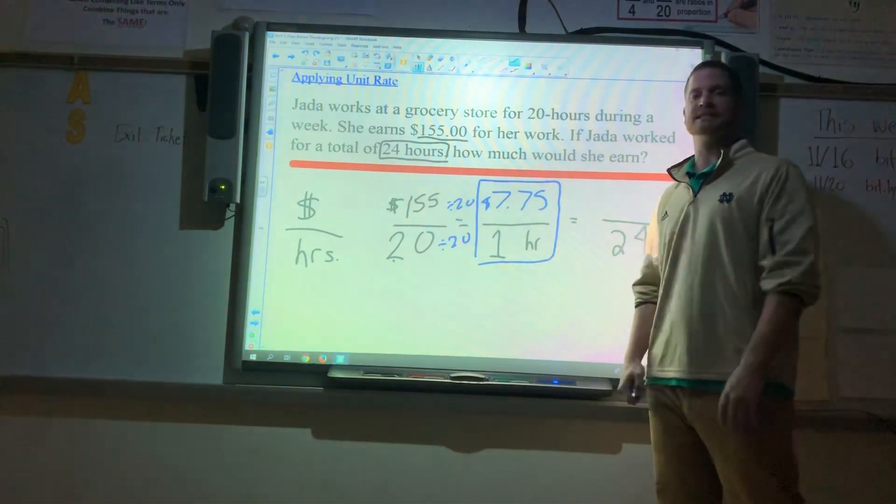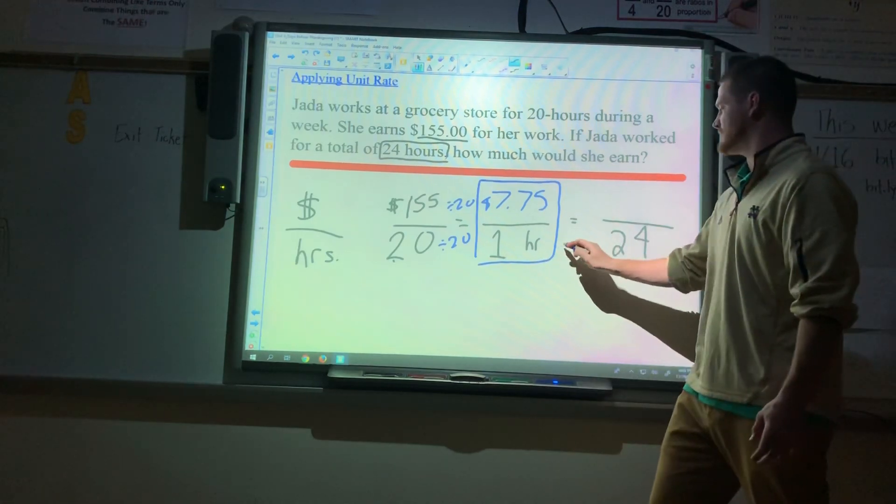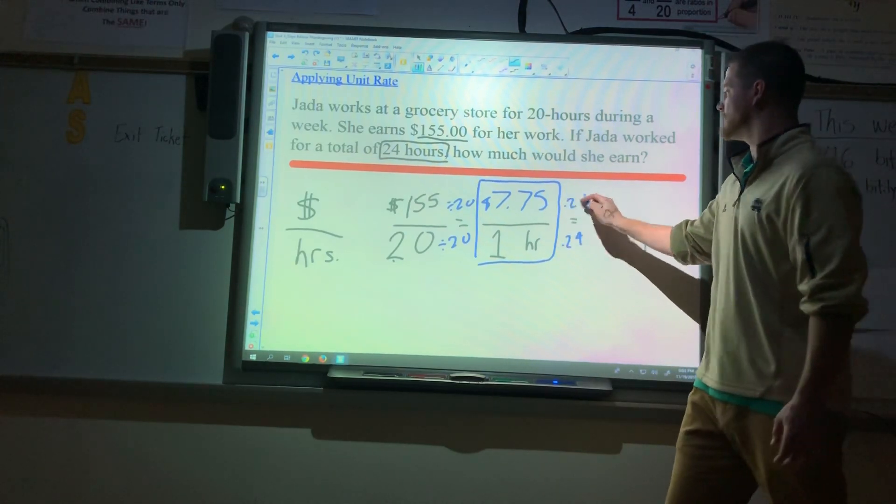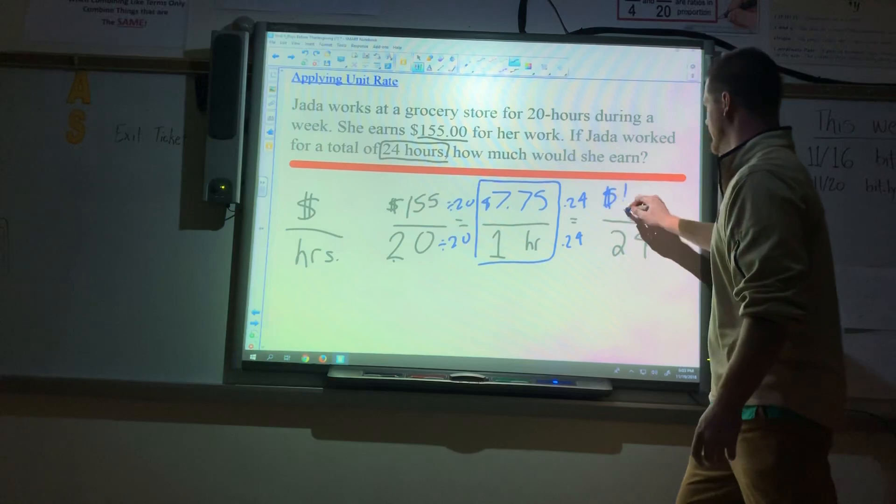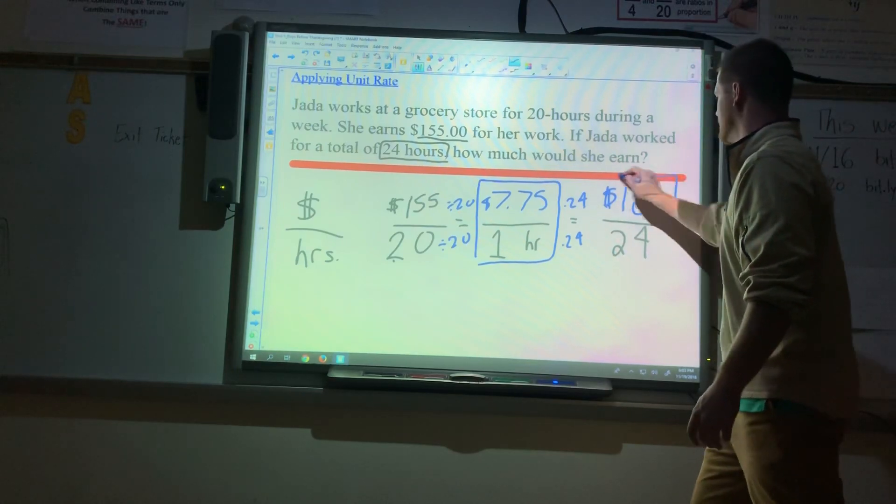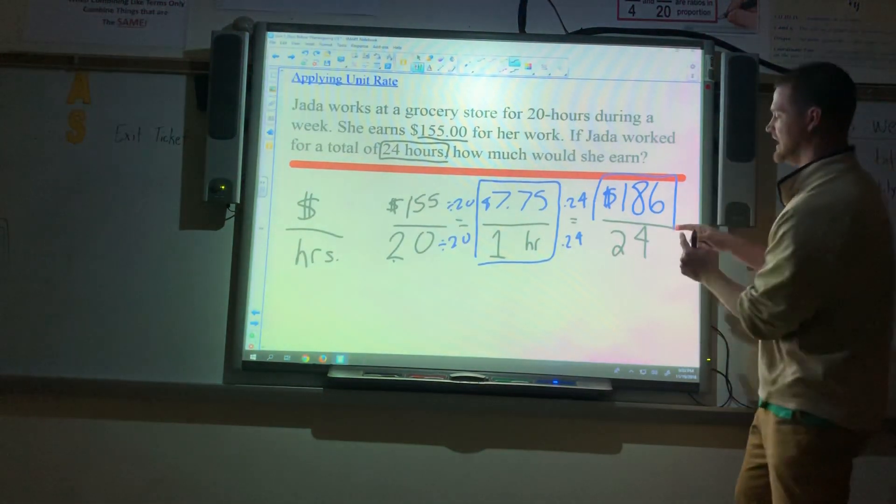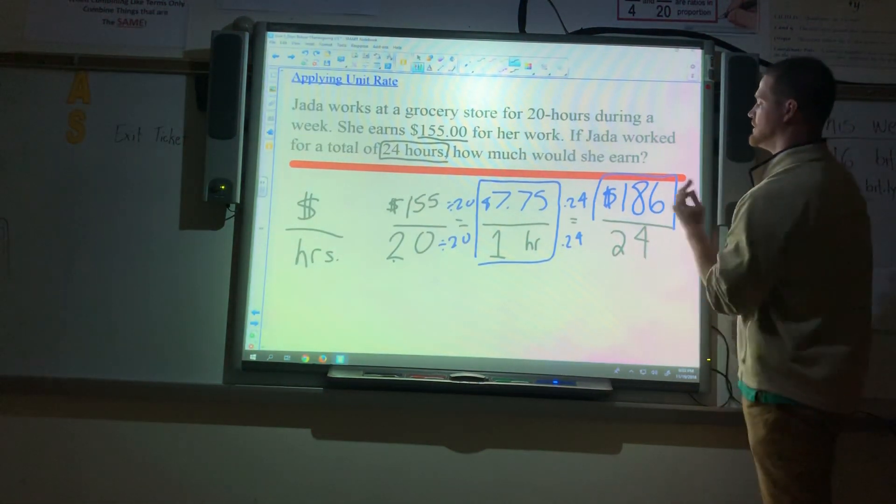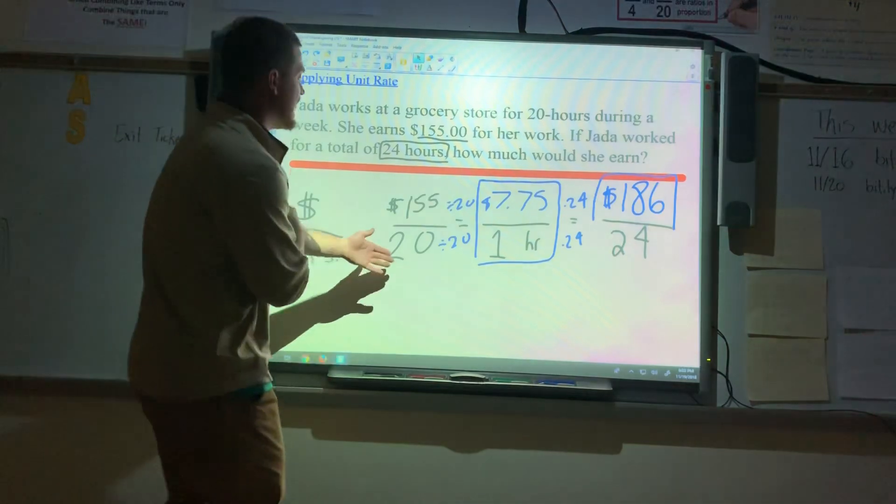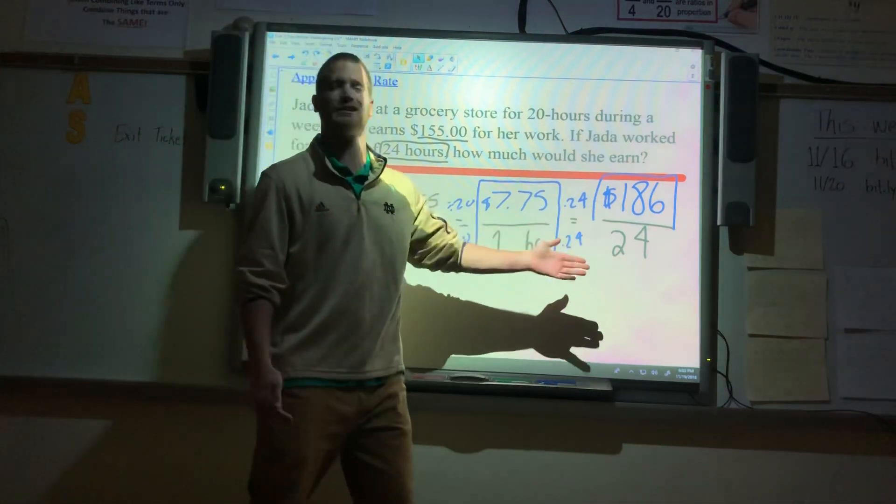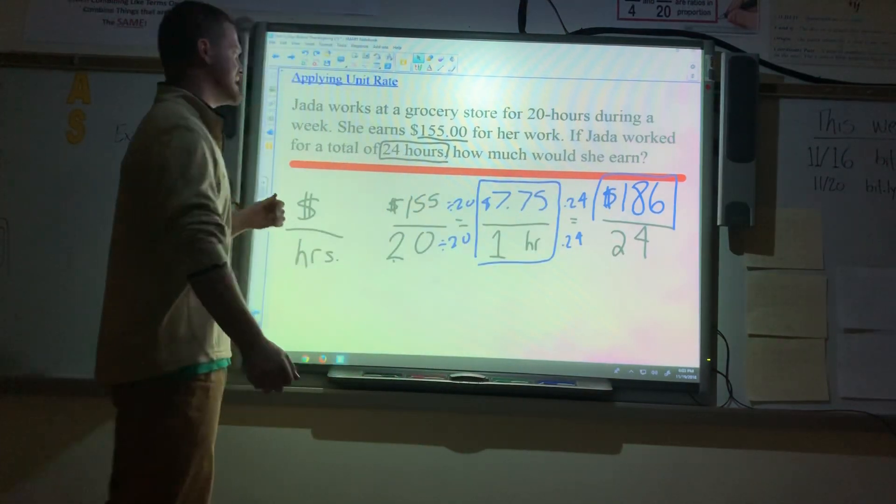If that was the case, then how much for 24 hours? We need to do times 24, times 24. When you type in 7.75 times 24, we get a dollar amount of $186. It's not $186 over 24. That's not the answer. The answer is just $186. It's saying, in 24 hours, she earns $186. Go back and see if your answer makes sense. Well, for 20 hours, she made $155. So, on 24, she's going to make a little more than $155. So, the $186 does make sense in this scenario.